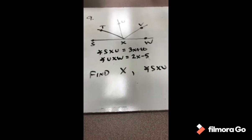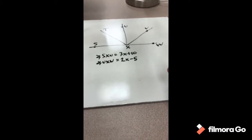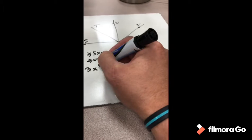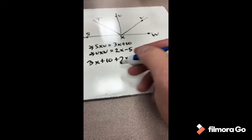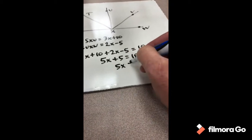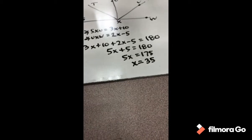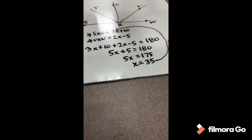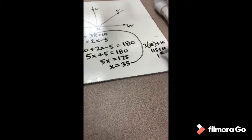For number 9, angle SXU is 3x + 10 and angle UXW is 2x − 5. Find x and find angle SXU. SXU and UXW are supplementary angles, so they add up to 180 degrees. Setting up the equation: (3x + 10) + (2x − 5) = 180. Combining like terms gives 5x + 5 = 180, so 5x = 175 and x = 35. Plugging back in: 3(35) + 10 = 105 + 10 = wait — 3 × 35 is 105... actually 3 × 35 = 115? Let me clarify: 3 × 35 = 105, plus 10 gives angle SXU = 115 degrees. The video states 115 + 10 = 125, so angle SXU = 125 degrees.